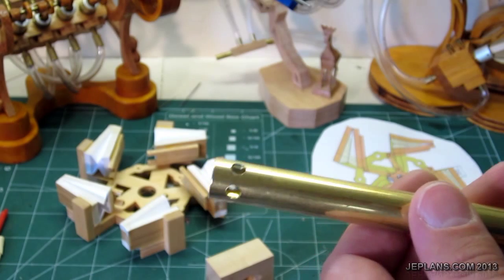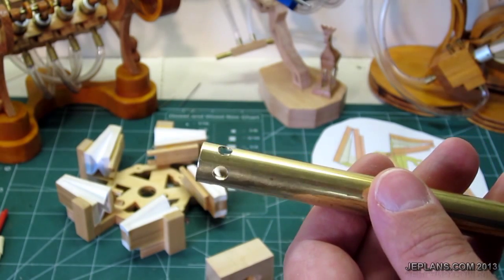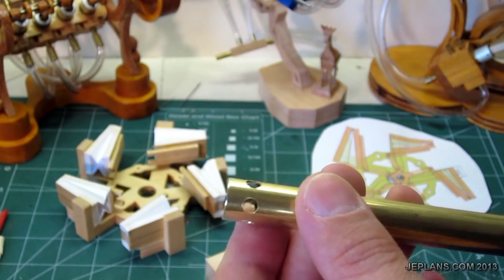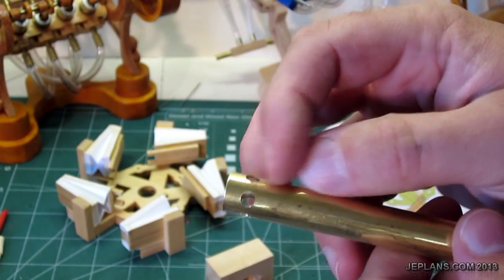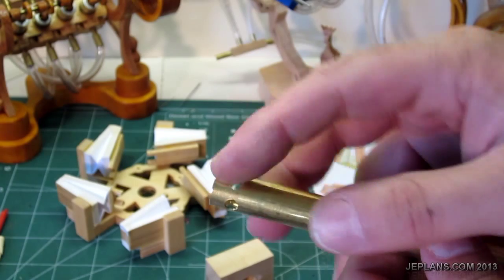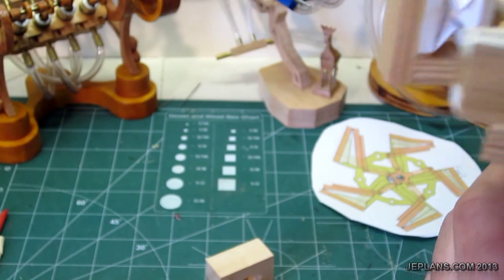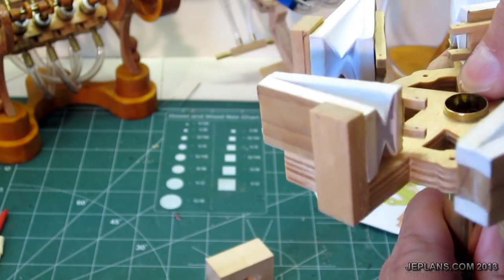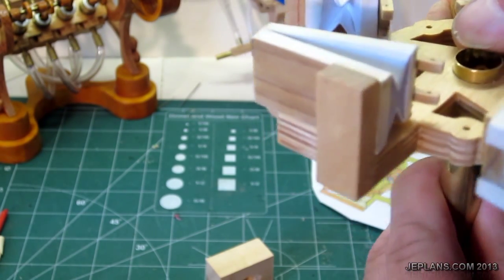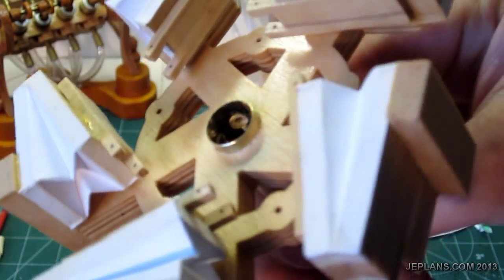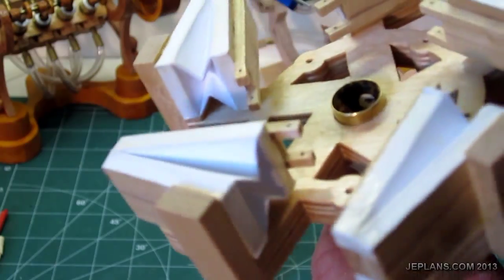The results from the jig are pretty good. There's a little allowance for slop, so to speak, back and forth. Once it's in place, it will be centered over the holes and it doesn't need to be exactly perfect.